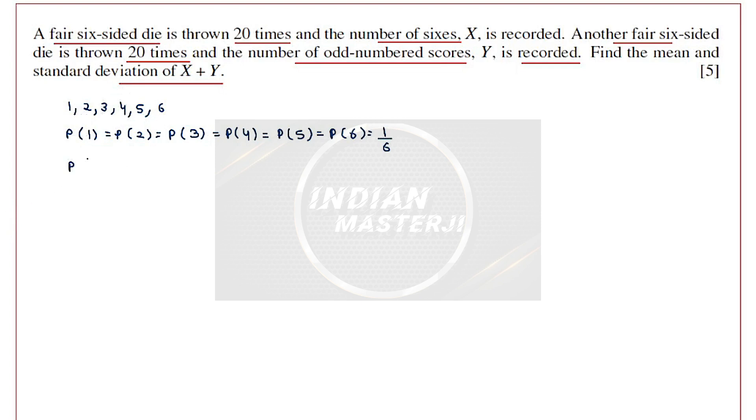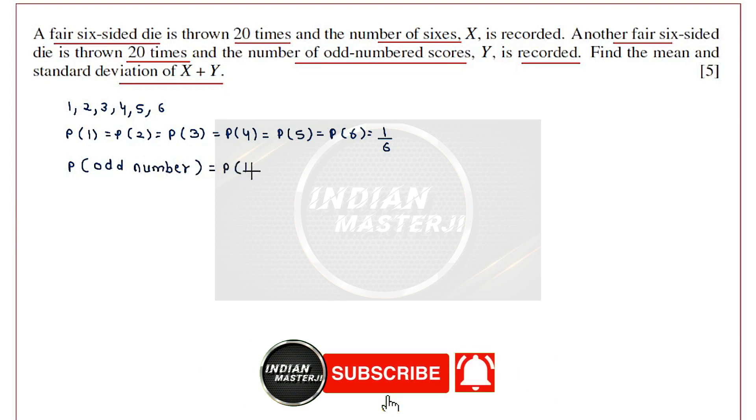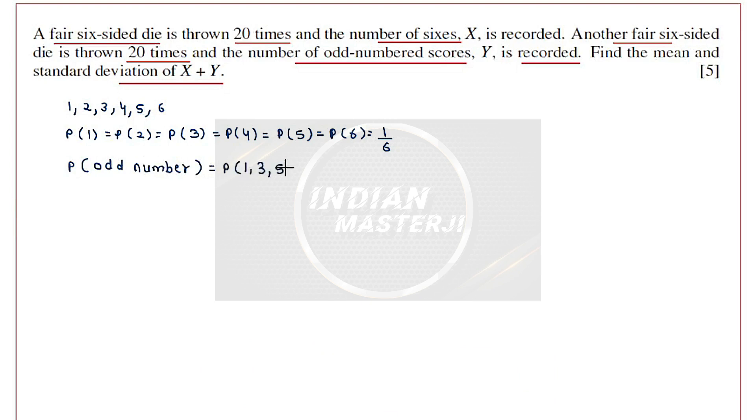Now what will be the probability of odd number score? Out of 1, 2, 3, 4, 5, 6, which are the odd numbers? 1, 3, and 5. So probability of getting 1, or 3, or 5 will be 1 by 6 plus 1 by 6 plus 1 by 6. That will be equal to 3 by 6, which is nothing but half.